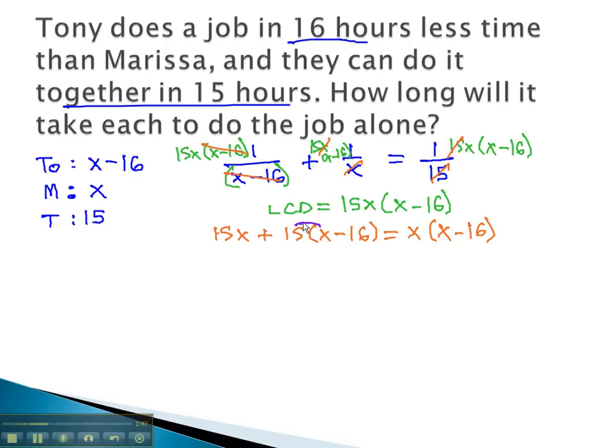We can continue solving by distributing through the parentheses to get 15x, plus 15x, minus 240, equals x squared, minus 16x. Combining like terms to clean it up, giving us 30x, minus 240, equals x squared, minus 16x.